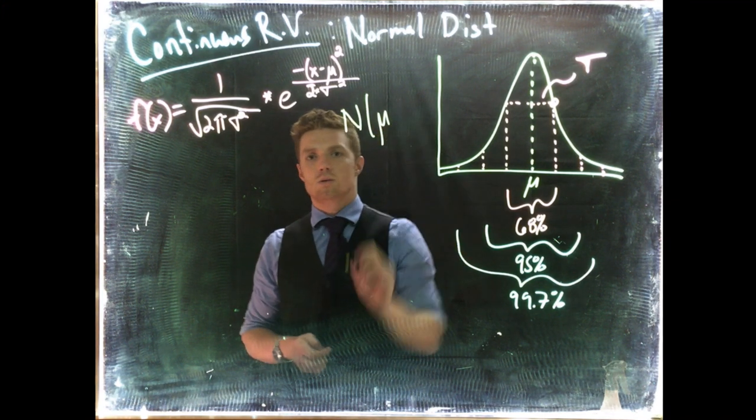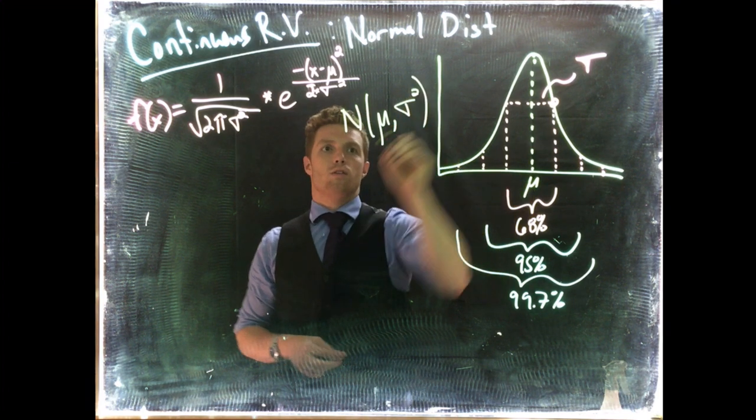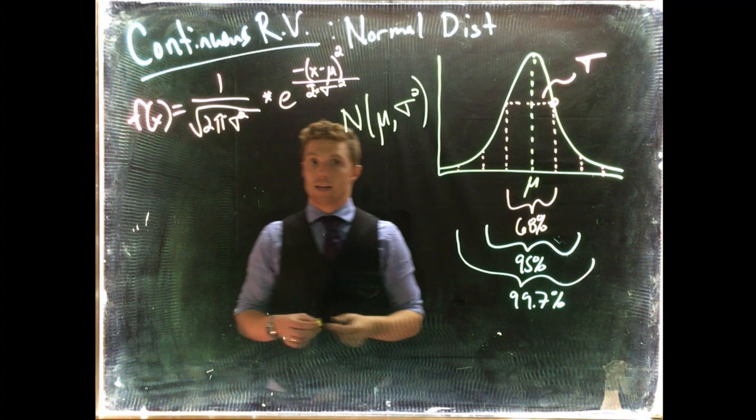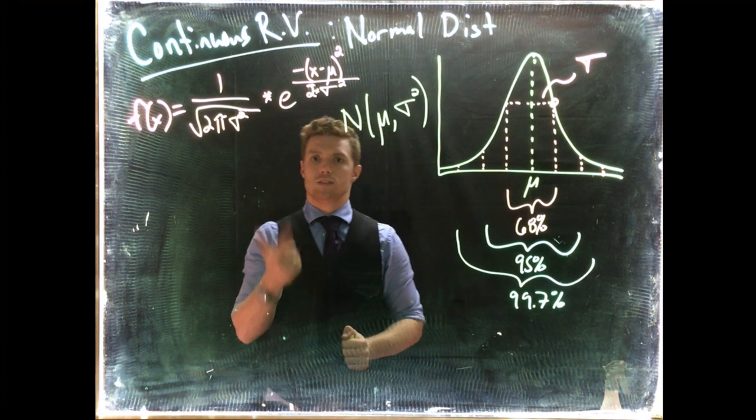You'll see it written a lot of times with the capital N that denotes that we're normally distributed, and then they'll give us mu or the mean and sigma squared or the variance. To fully define it we need the mean and then we either need the standard deviation or the variance.